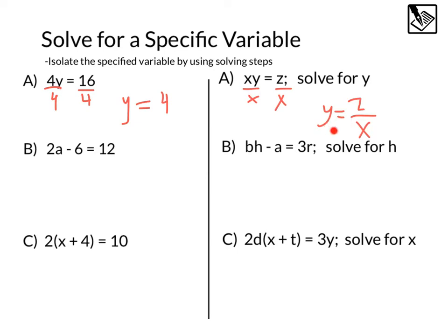And when we have more than one variable, we can't combine them, we can't cancel them out, we can just leave them as they are, so this would be the answer, y equals z divided by x.